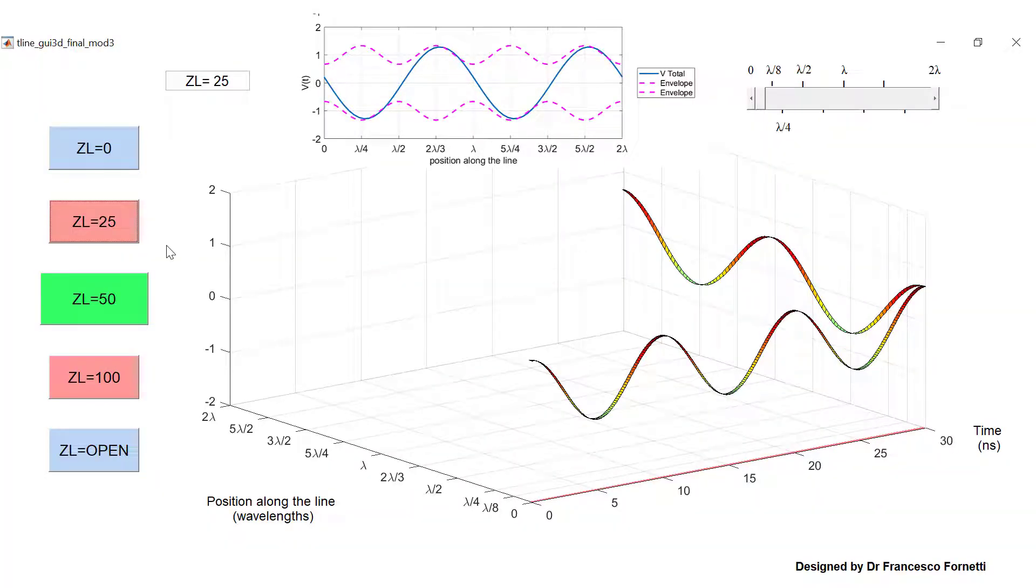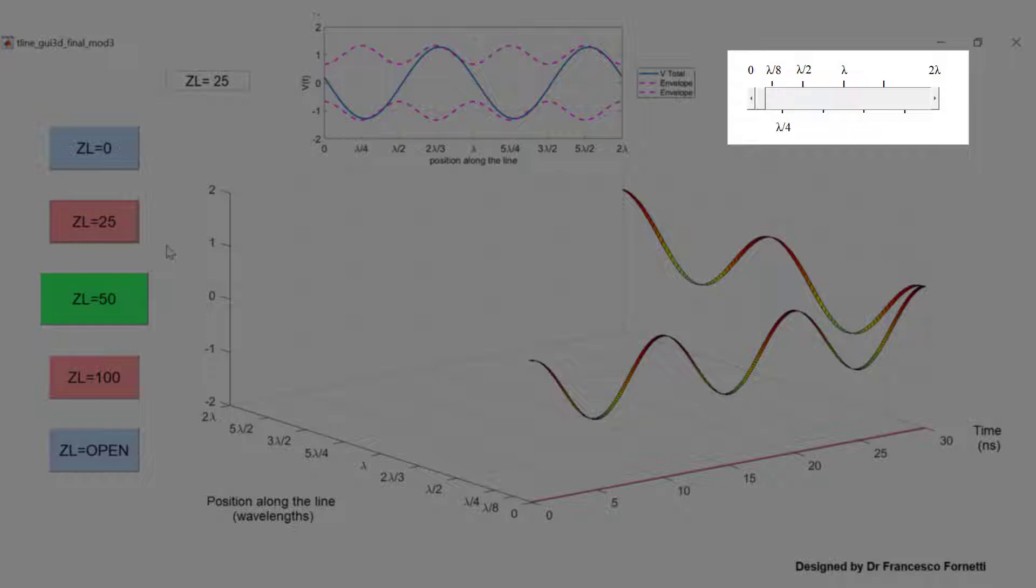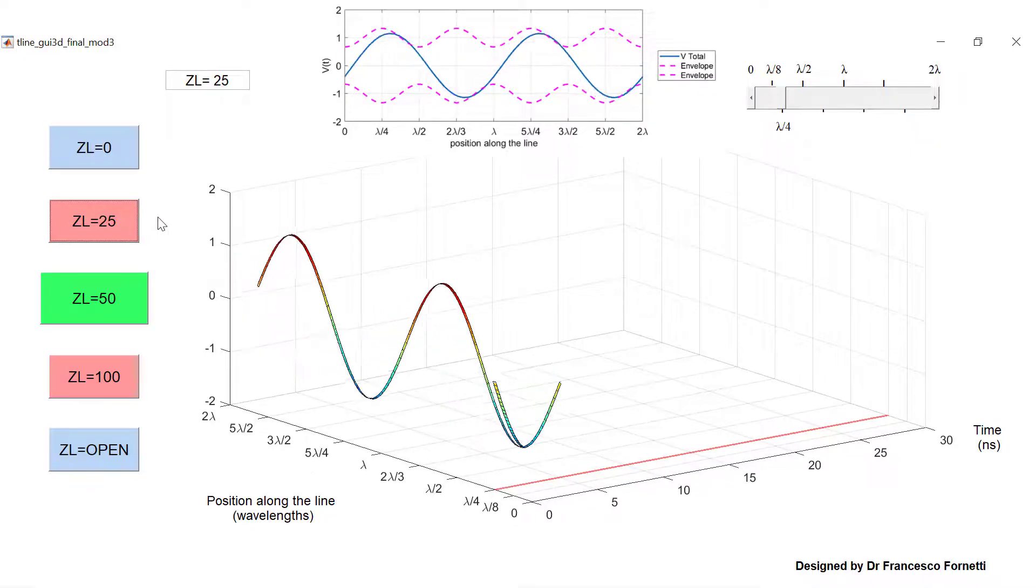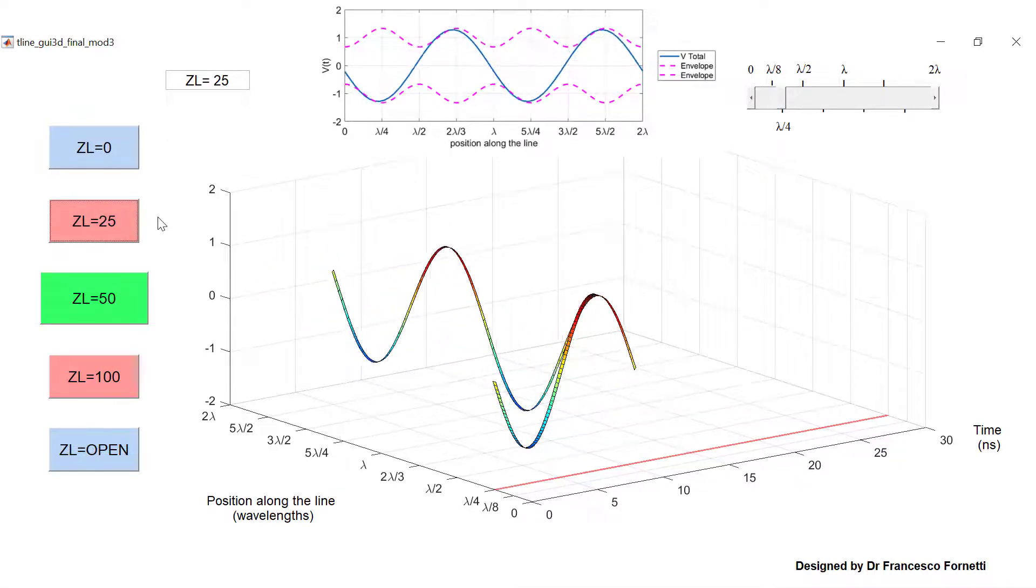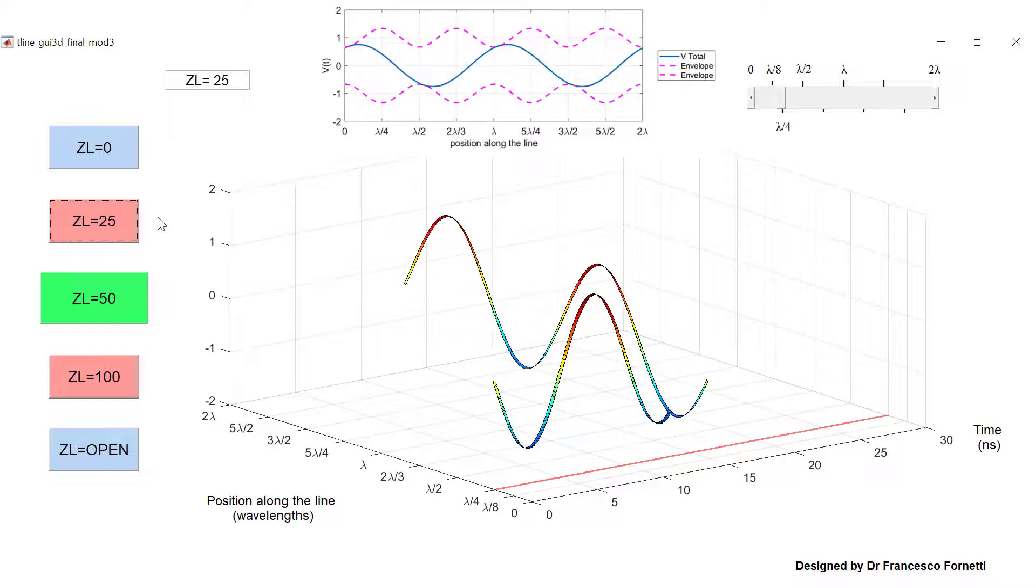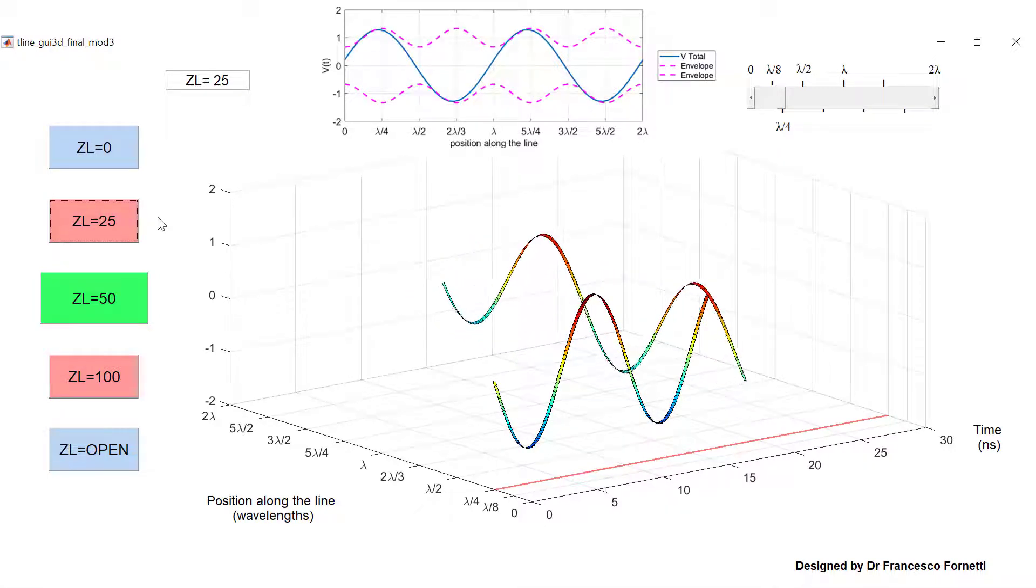We can then move down the line by a quarter of a wavelength, again using the slider. Now we can see that the amplitude of the measured voltage at this point is much larger than it was at the zero coordinate. Indeed, since we have moved a quarter of a wavelength from a point of minimum amplitude,